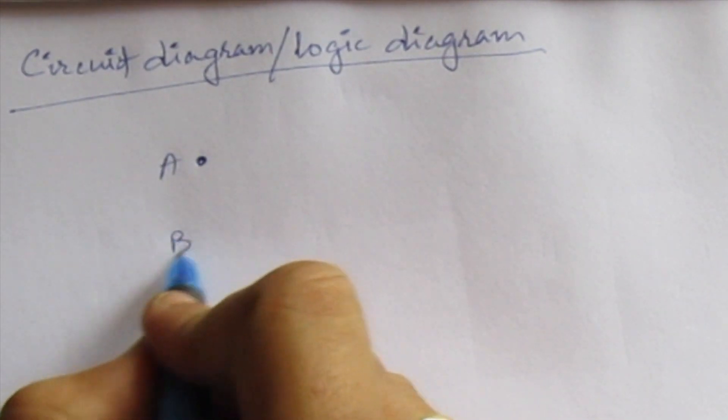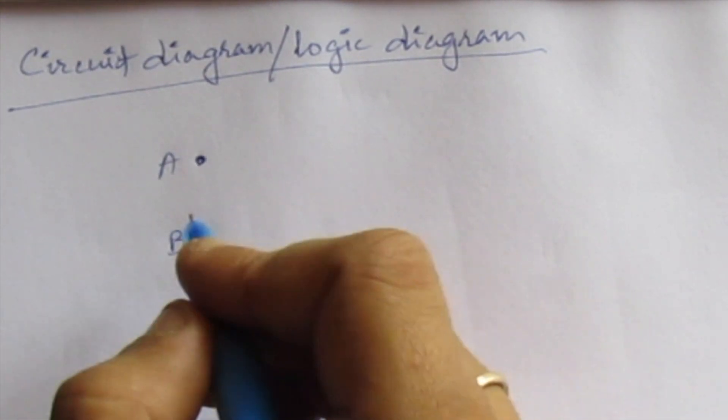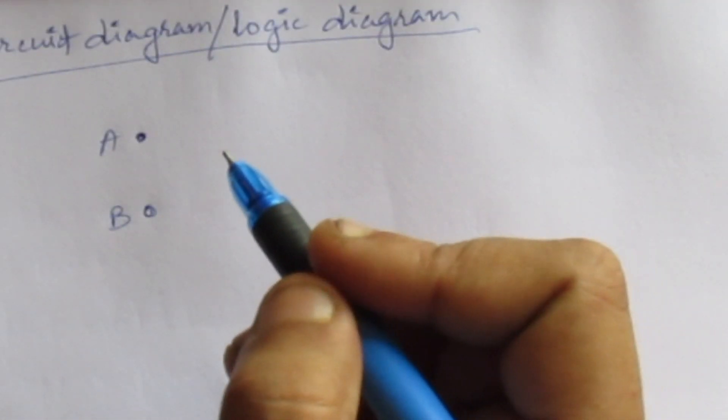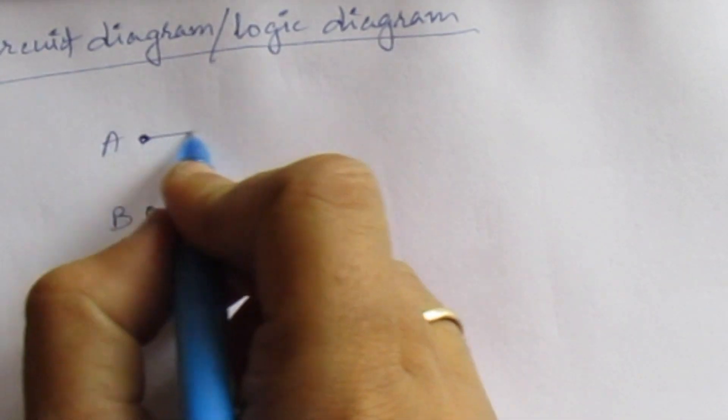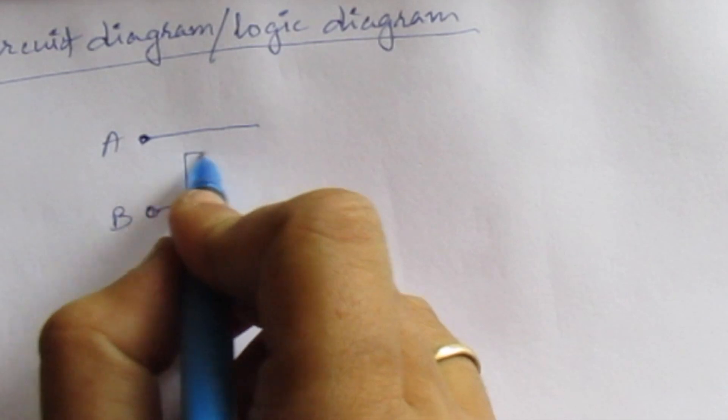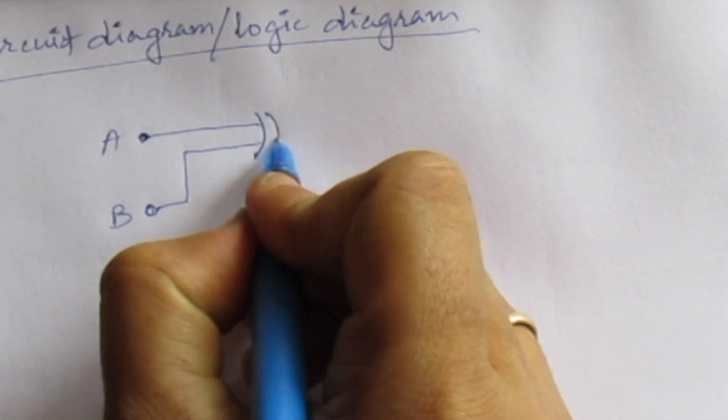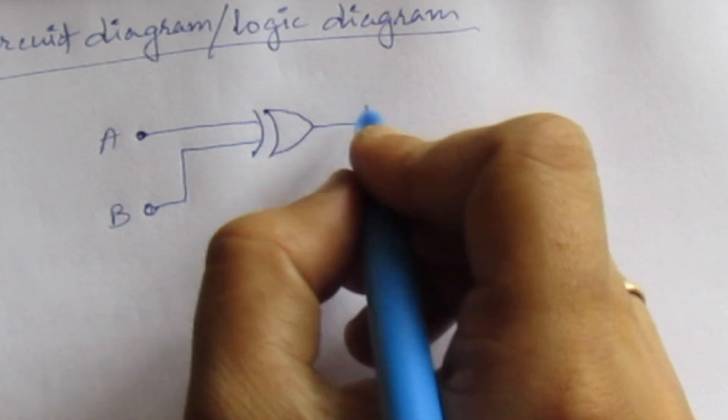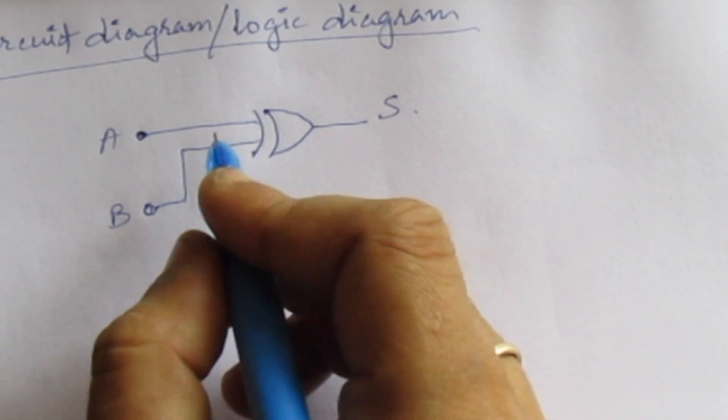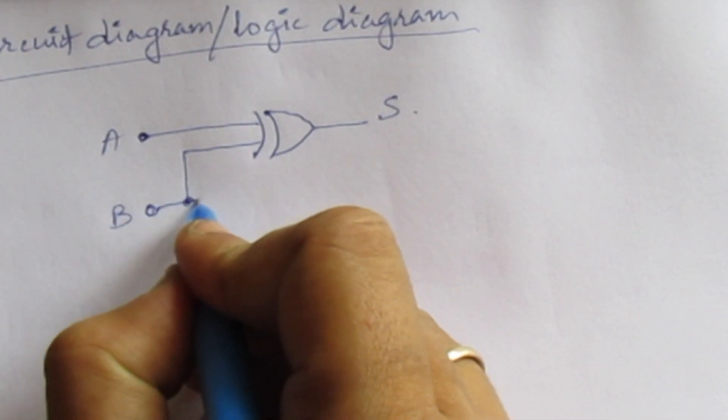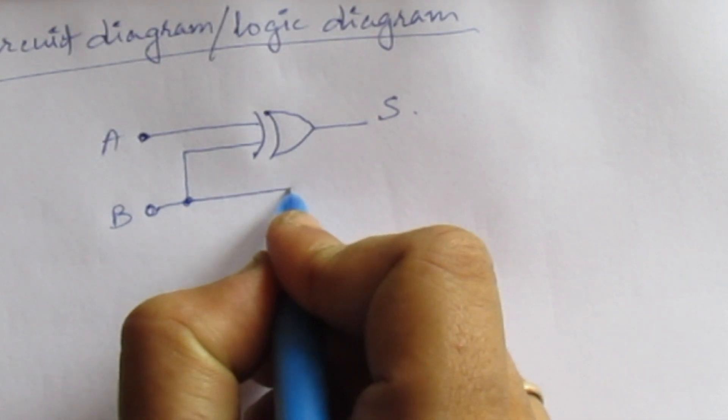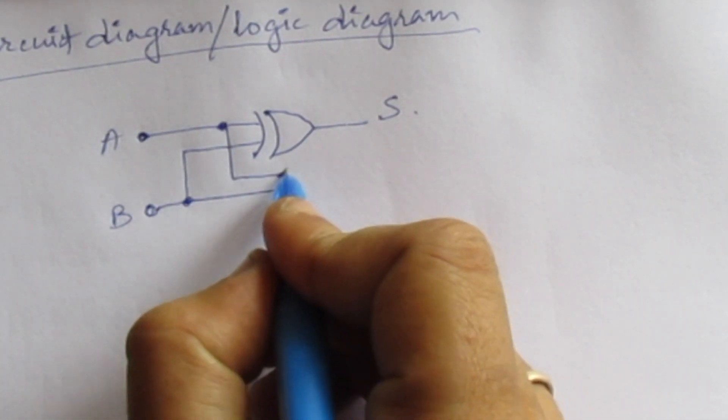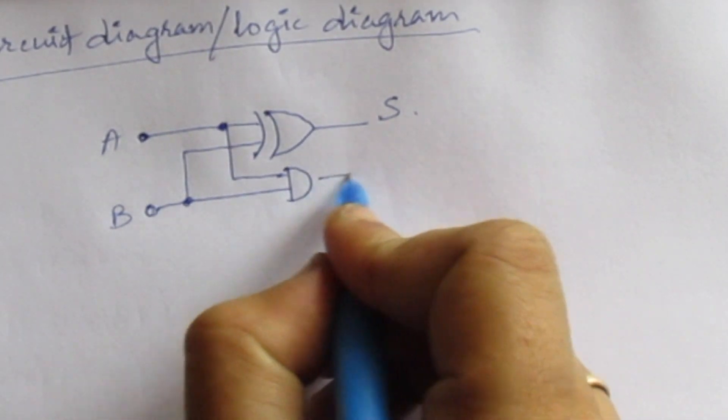These are the two inputs, A and B. This is the AND gate, we get the carry.